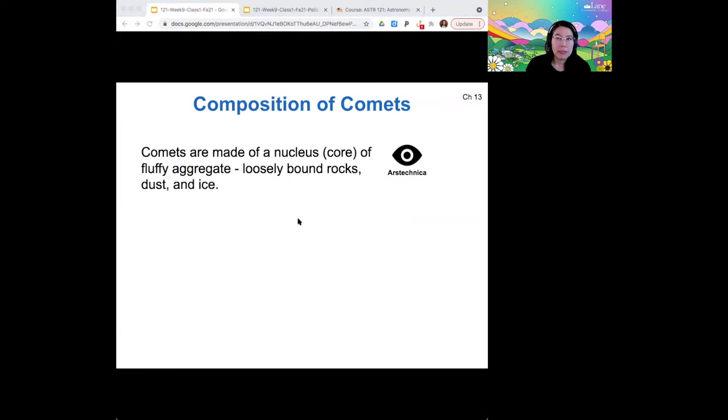They are a fluffy kind of collection of icy particles, mostly with some dust and rock. They are primarily ice, but they do have some dust, and so that leads many astronomers to describe them as dirty snowballs.